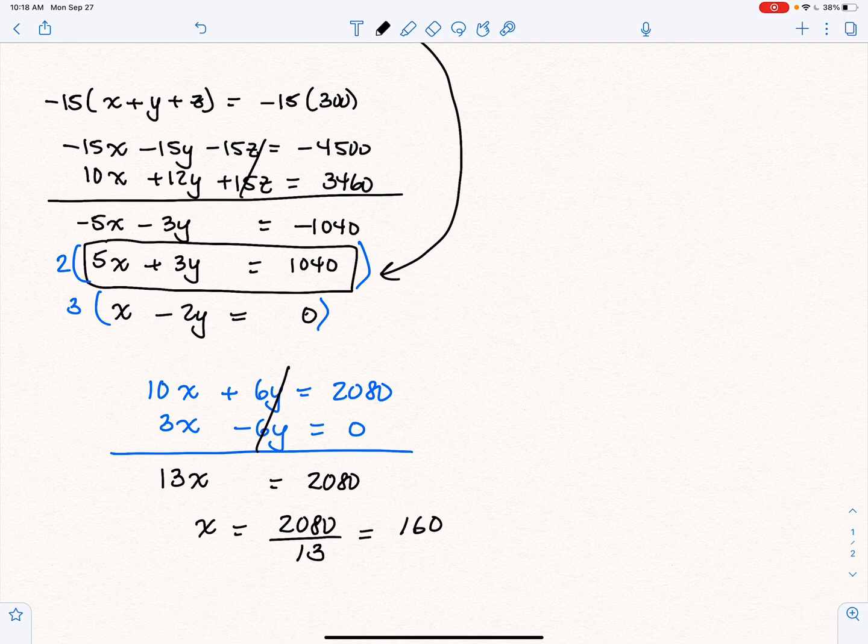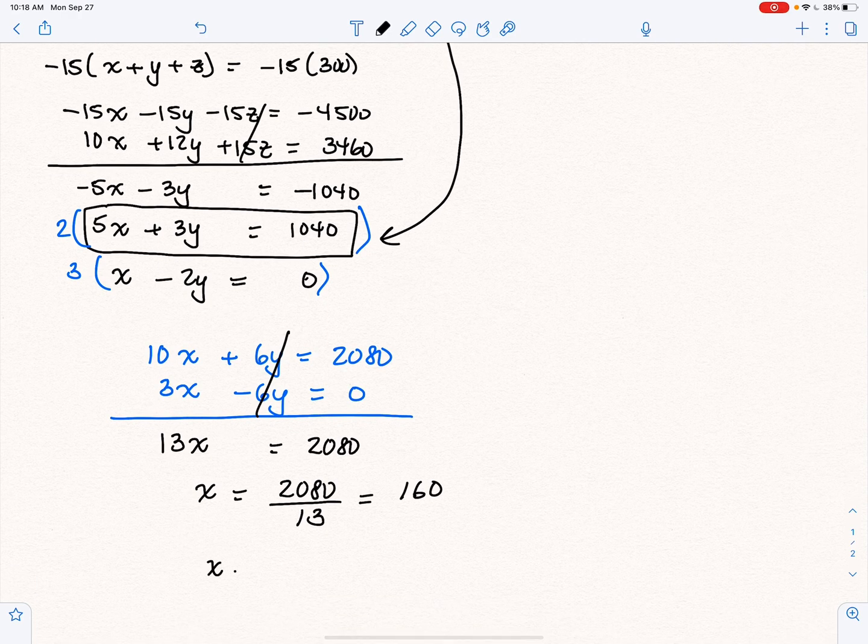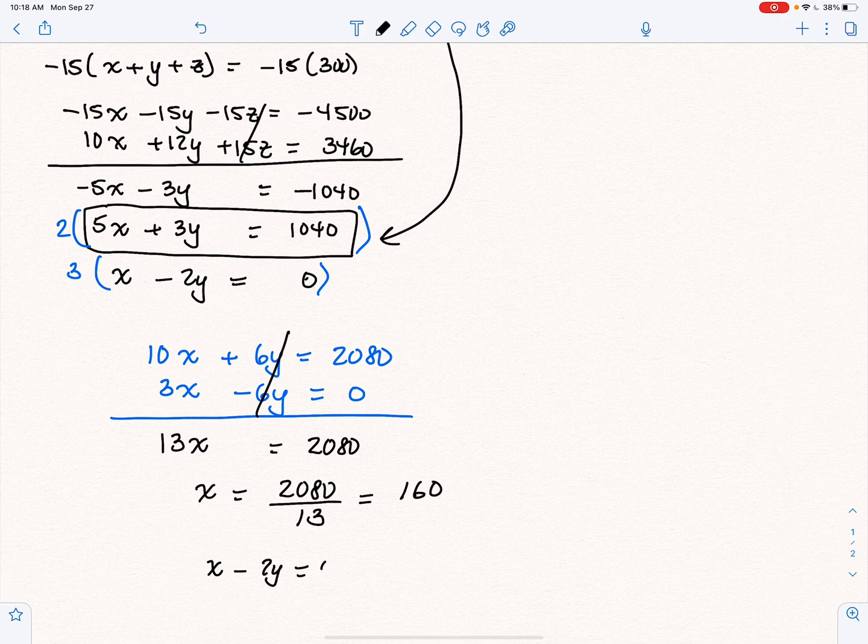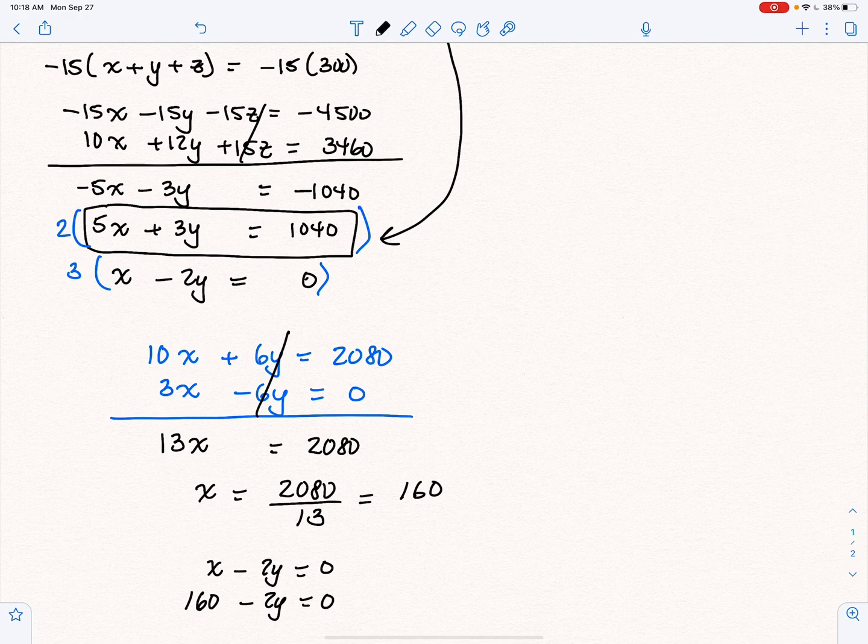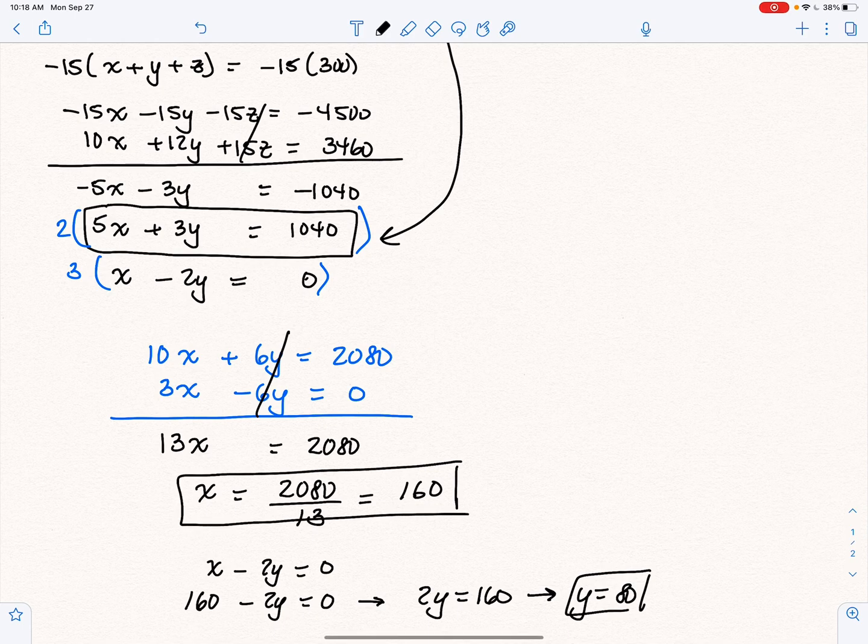Well, now I have to look back at all of the equations that we have and try to find one variable at a time. Now, notice we have x minus 2y equals 0. So you can easily find y. So x is 160 minus 2y equals 0, which means 2y equals 160, which means y is equal to 80. So I'm just going to box these in here so we have our solution.